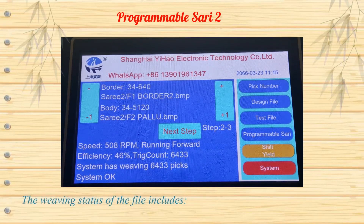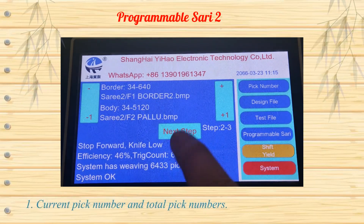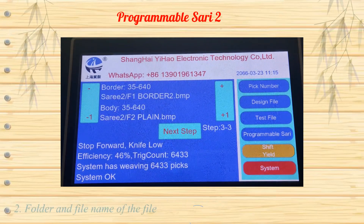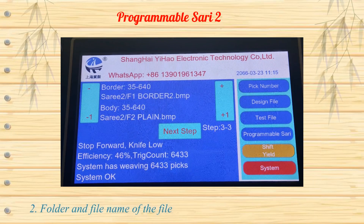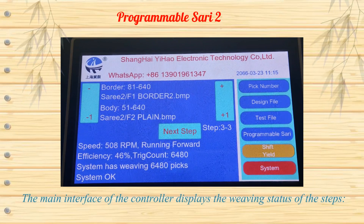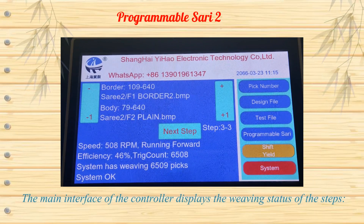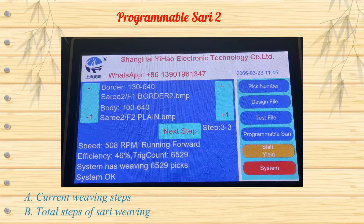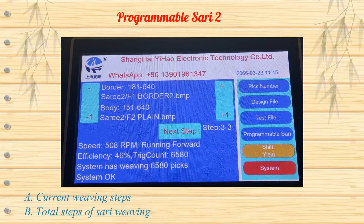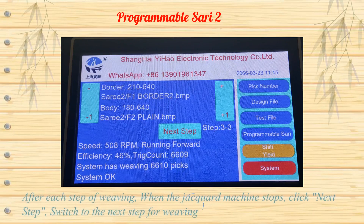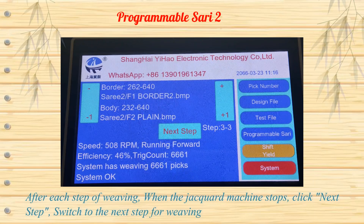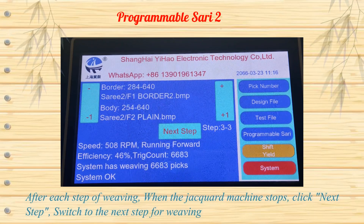The weaving status of the file includes current weaving steps and total steps of sari weaving. The main interface of the controller displays the weaving status of the steps. After each step of weaving, when the jacquard machine stops, click Next Step to switch to the next step for weaving.